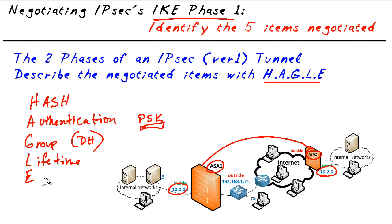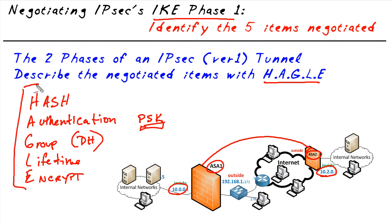Finally, we have the E, and that's for encryption. What type of encryption algorithm do we want to use? Do we want to use AES, triple DES, or some flavor of AES like AES-256? These are the five elements that the two devices have to negotiate for IKE Phase 1.